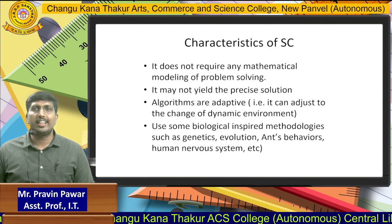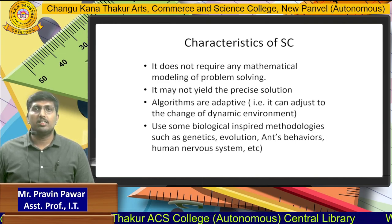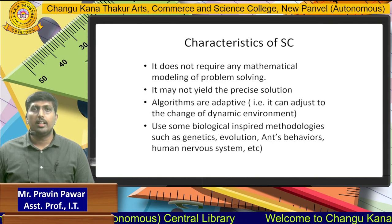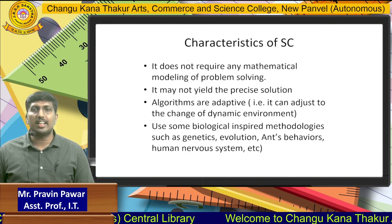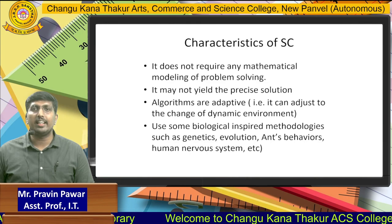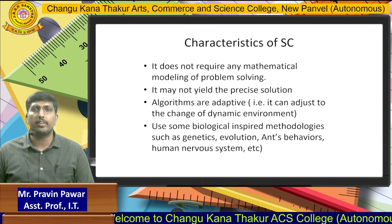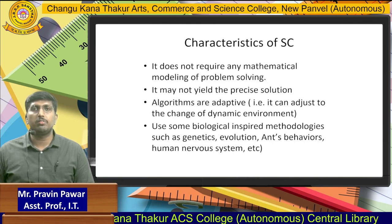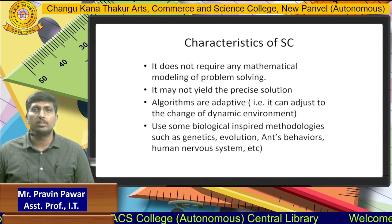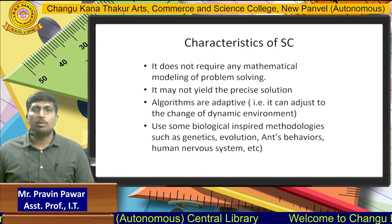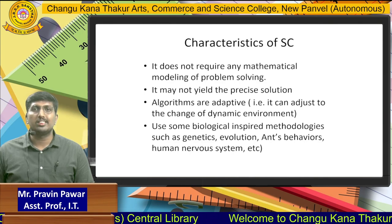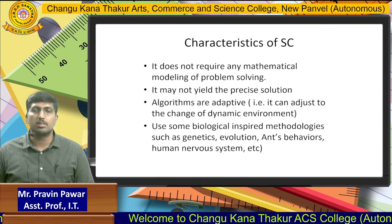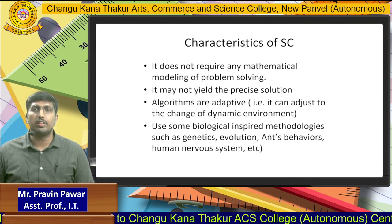The characteristics of soft computing: it does not require any mathematical modeling for problem solving. It may not yield precise solutions — it will never provide an exact or precise output for any input. The algorithms used are adaptive. Finally, it uses biologically inspired methodologies such as genetic evolution, swarm behaviors, or the human nervous system. These are the characteristics of soft computing.